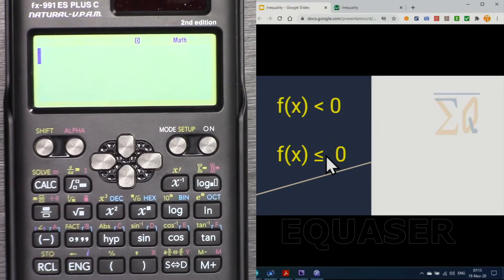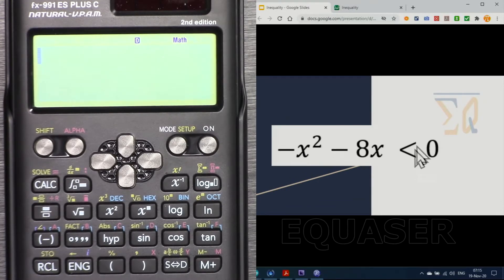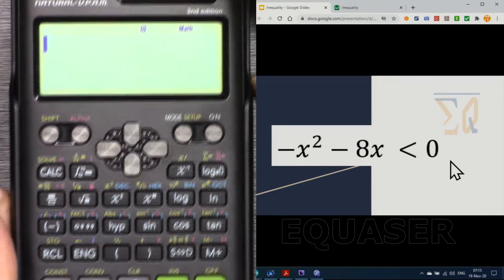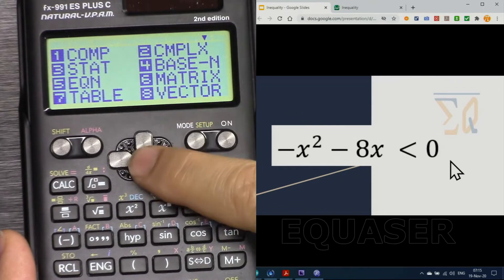For that we can do this. For example, if this is our function -x² - 8x < 0, we can do it in this calculator by pressing this button and then go to the next screen.